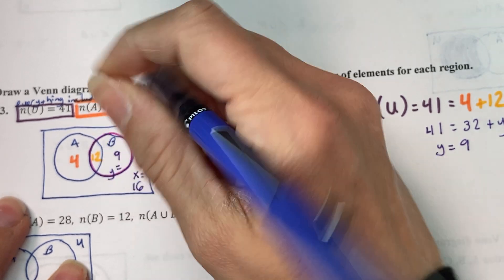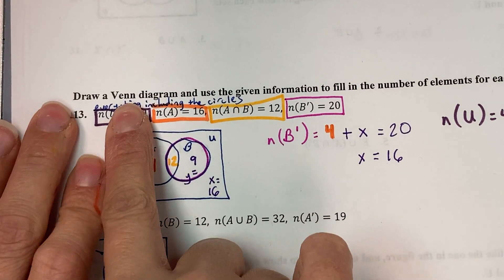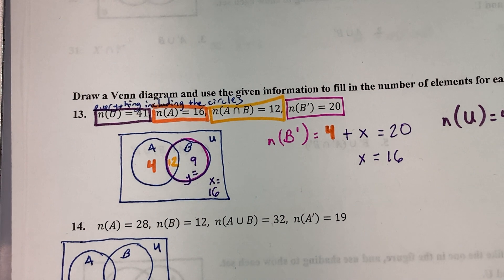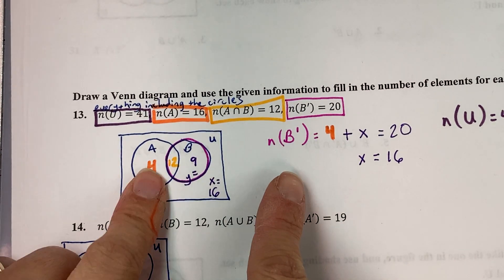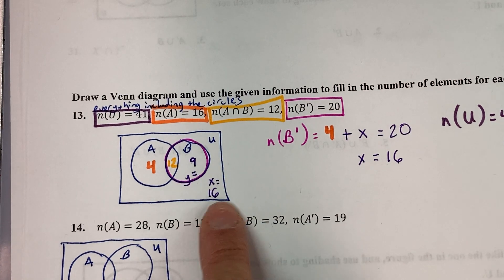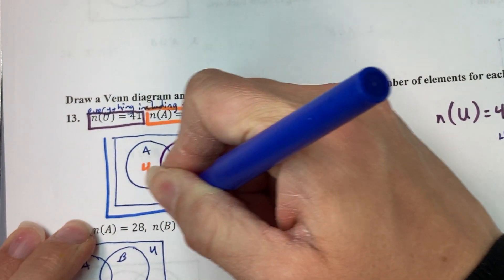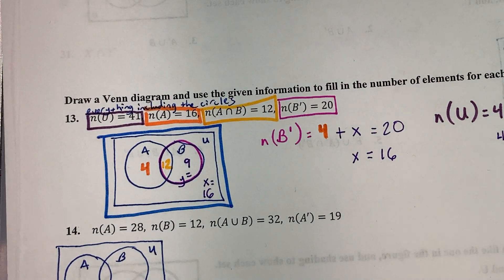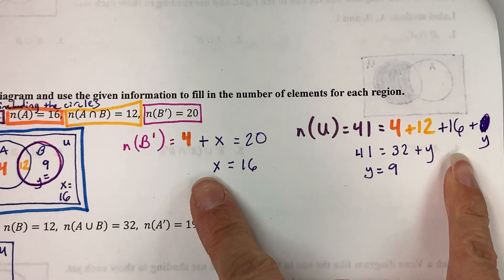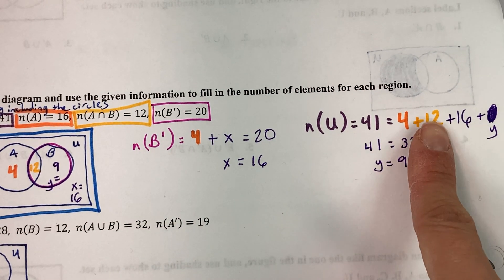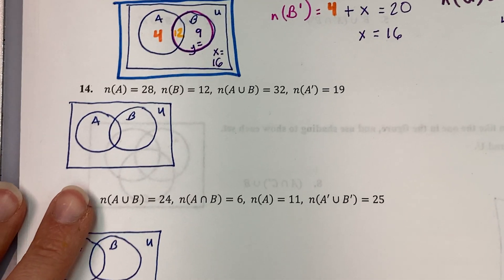We have now answered the question because we've filled in all four regions of the two-circle Venn diagram: elements only in A, only in B, the intersection, and elements in the universal set but not in A or B. On these problems I would like to see some work showing how you solved for missing elements. You don't have to use variables X and Y — you could just write something like 41 minus 4 minus 12 minus 16 equals 9. Do whatever works for you to find those missing values.